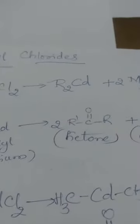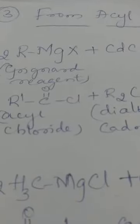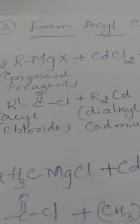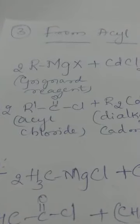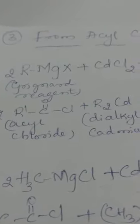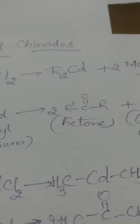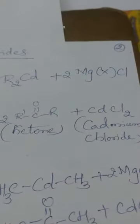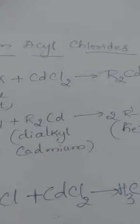This dialkyl cadmium reacts with acyl chloride: 2R'COCl plus R2Cd. Two molecules are taken to balance the equation. The product formed is a ketone R-C=O-R', with the elimination of the byproduct CdCl2 (cadmium chloride). This cadmium chloride can be recycled in the first step.